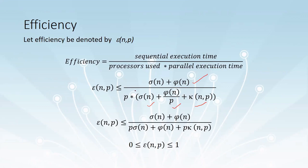Multiplying by the number of processes, epsilon of n, p is always less than or equal to sigma of n plus phi of n, divided by p times sigma of n plus phi of n plus p times kappa of n, p, where epsilon ranges from 0 to 1.